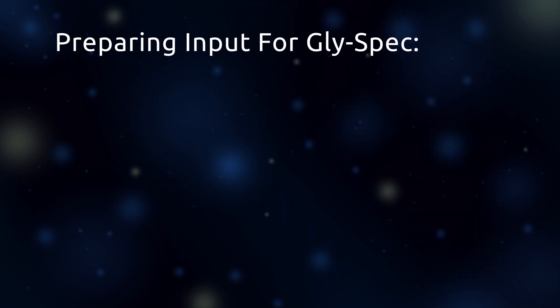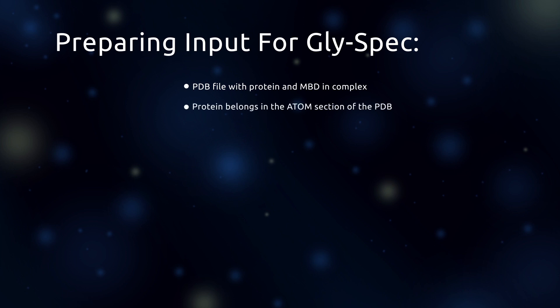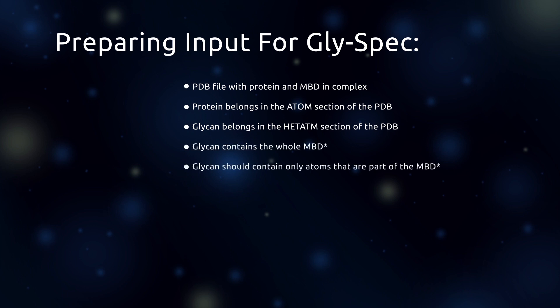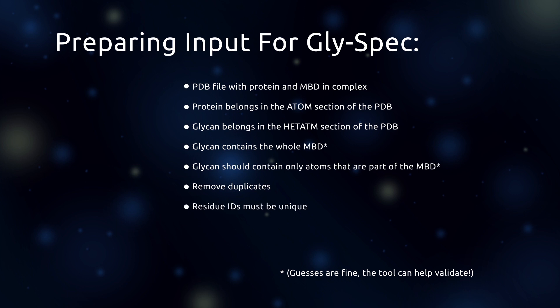In summary, when preparing data for the GlySpec tool, you will need a PDB file with the protein and MBD in complex. Make sure that your protein is in the ATOM section and the glycan is in the HETATM section. Your glycan should contain the whole MBD, but only the MBD. If you are unsure of the MBD, it is okay to guess and use your results to assess your guess. Check for and remove any duplicate molecules or residues, and make sure all residue IDs are unique. Finally, if you have one, you may want to upload a simple text file with a list of known binders.